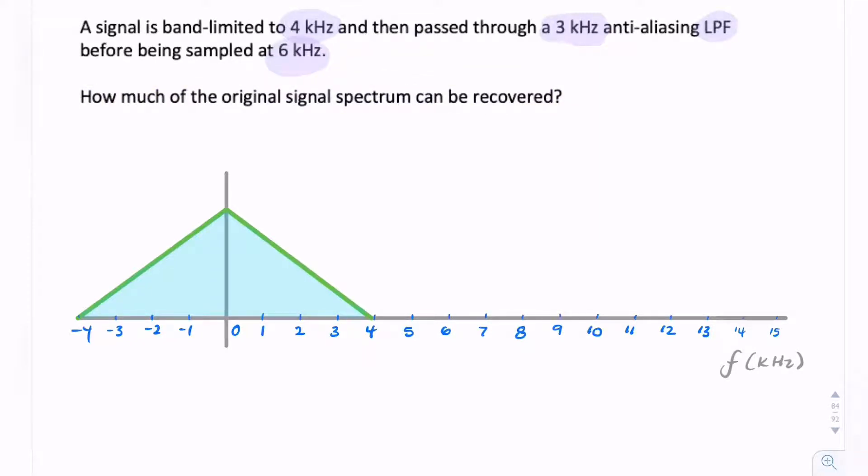Let's look at what the filter will do. The filter, because it has a 3 kHz bandwidth, will only allow signals between minus 3 and 3 kHz to pass. Or really, we should say between 0 and 3 kHz to pass. So this is the output of our filter.